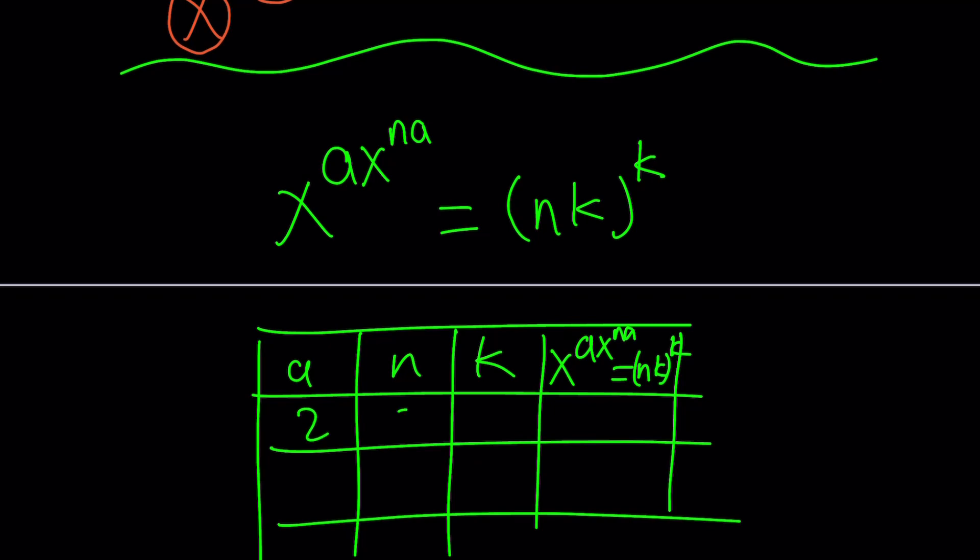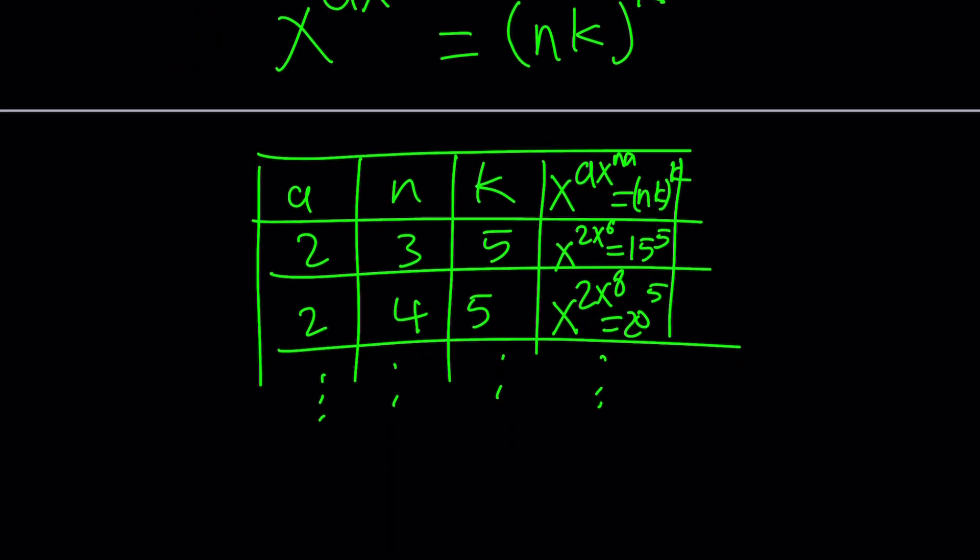Let me show you a couple values. If a is equal to 2, n is equal to 3, and k is equal to 5, you get x^(2x^6) equals 15^5. When a is 2, n is 4, and k is 5, you get x^(2x^8) equals 20^5. You can definitely generate thousands of values with this.